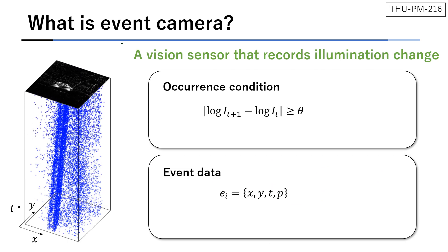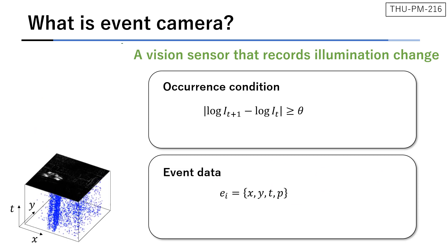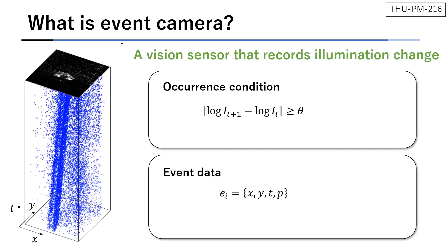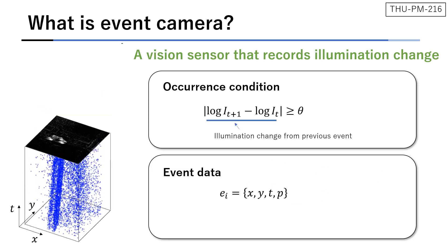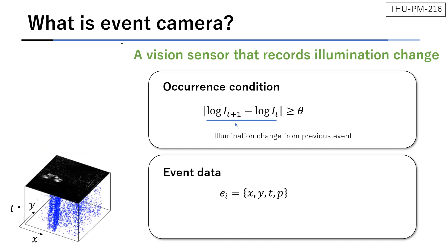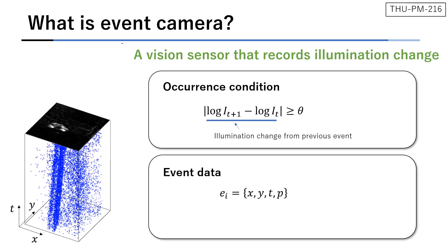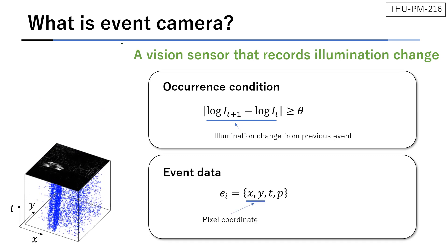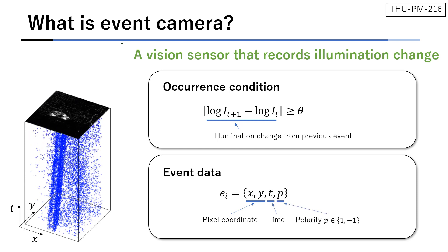To begin with, what is event camera? Event camera is a vision sensor that records illumination change. Each pixel records an event when illumination change from the previous event exceeds a threshold. Event data is like a point cloud in spatiotemporal 3D space. Each event has four values: pixel coordinate x, y, a timestamp t, and a polarity p.